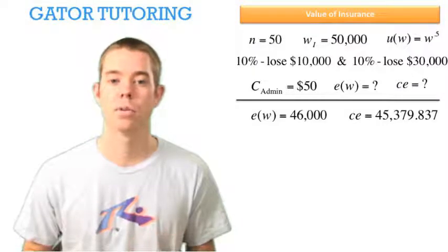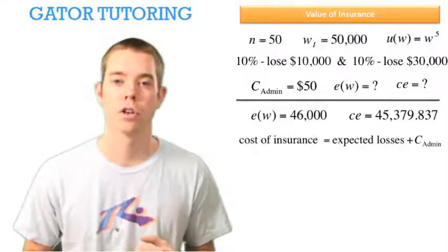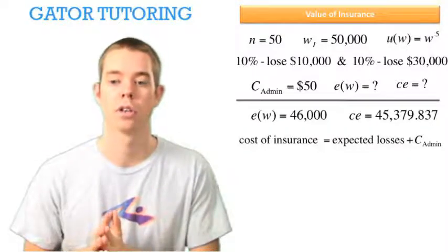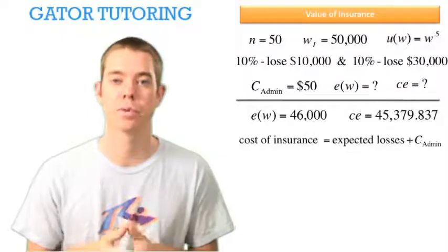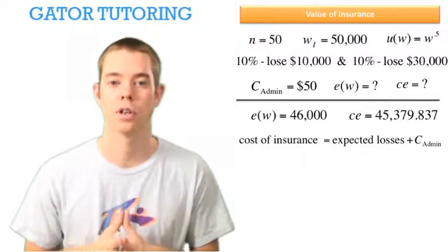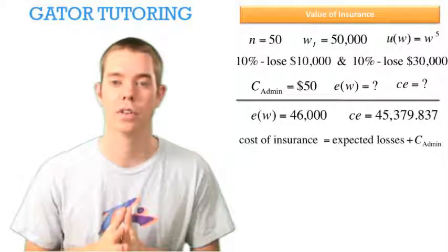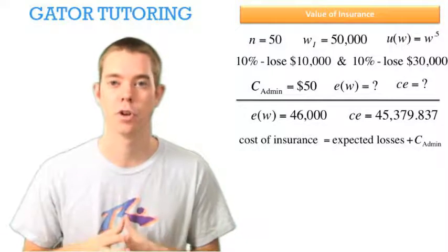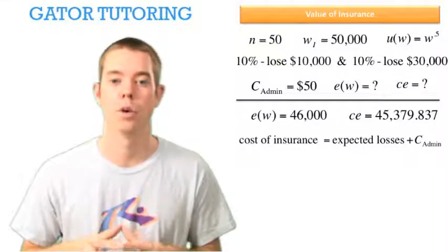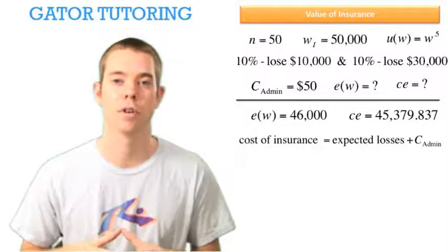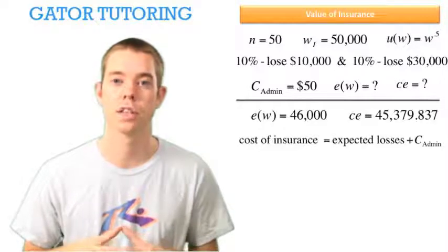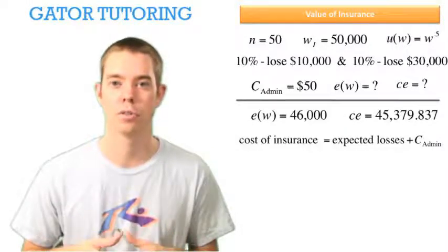Now we've found the expected wealth and the certainty equivalent. The cost of insurance equals the expected losses plus the administration cost. The paragraph told us this is a perfectly competitive insurance market. In a perfectly competitive industry, all firms are making zero profit — they're identical firms making zero profit, which means the amount they charge us just covers their cost. The cost to the firm is the expected losses plus the administration cost — what it costs to have people filing reports, taking phone calls, and making policies.